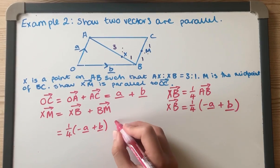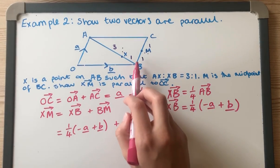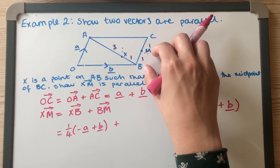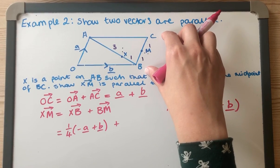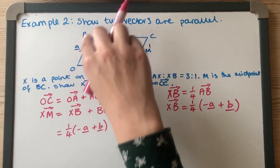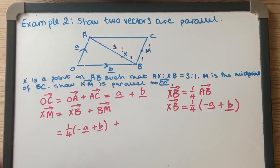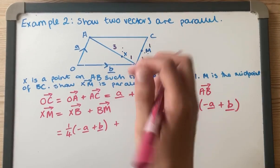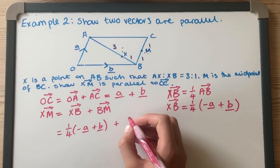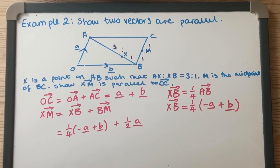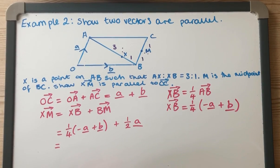Now I need to work out what B to M is. B to M is this bit here. We know that this is a midpoint, so this bit is half of BC. Because this is a parallelogram, side OA is equivalent to BC. So that means BC is A, and because BM is half of that, B to M is going to be half of A.